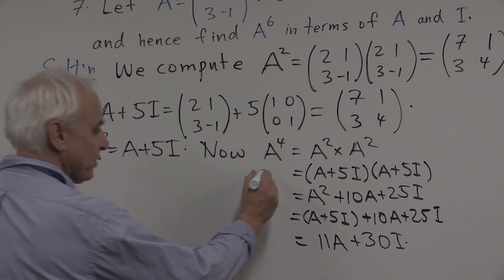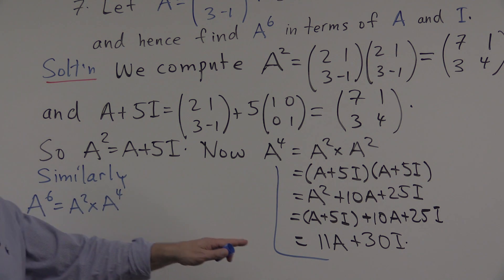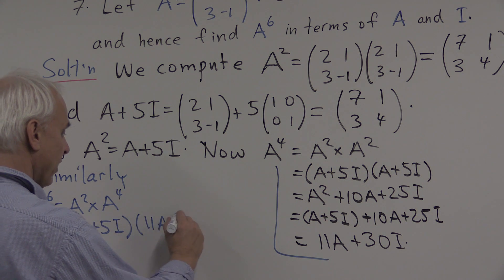So similarly, if we look at A to the sixth, well, that's going to be A squared times A to the fourth. We've just calculated what A to the fourth is. We know what A squared is from up there. So it's A plus 5I times A to the fourth. We've just decided is 11A plus 30I.